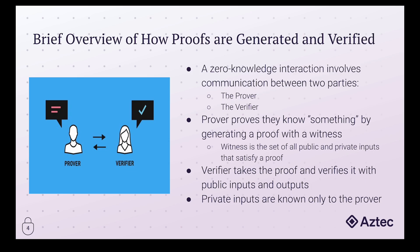The prover is the one who generates a proof, and they do so with a witness. A witness involves taking a zero-knowledge circuit and providing it the set of public and private inputs and outputs that generate a valid circuit where all constraints are met — we'll get into that in a later slide.